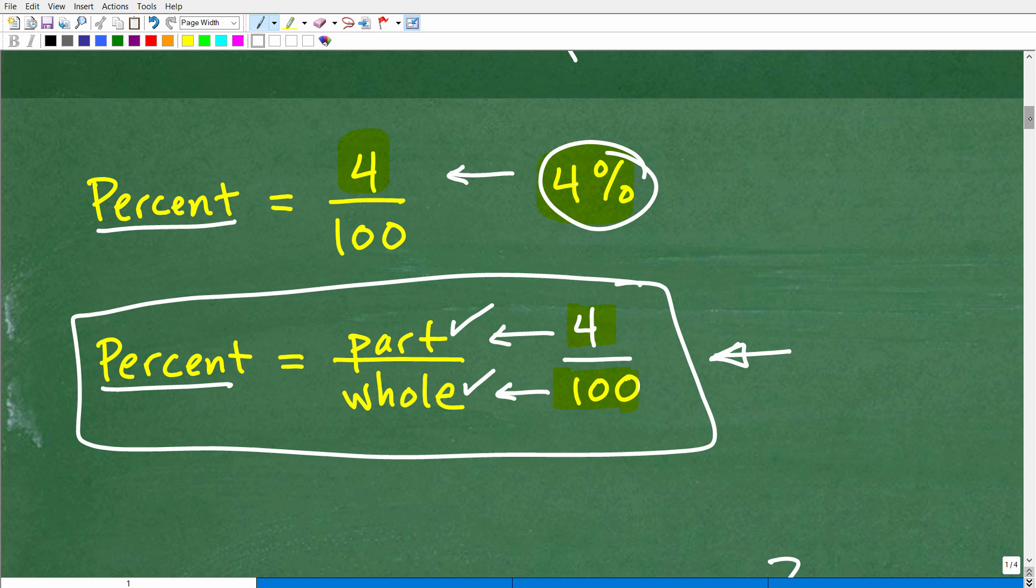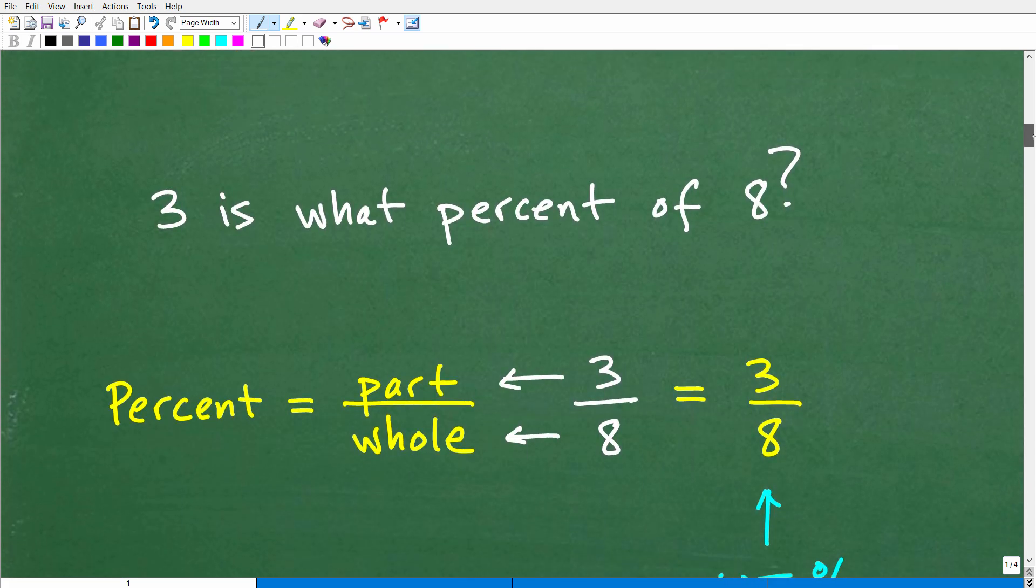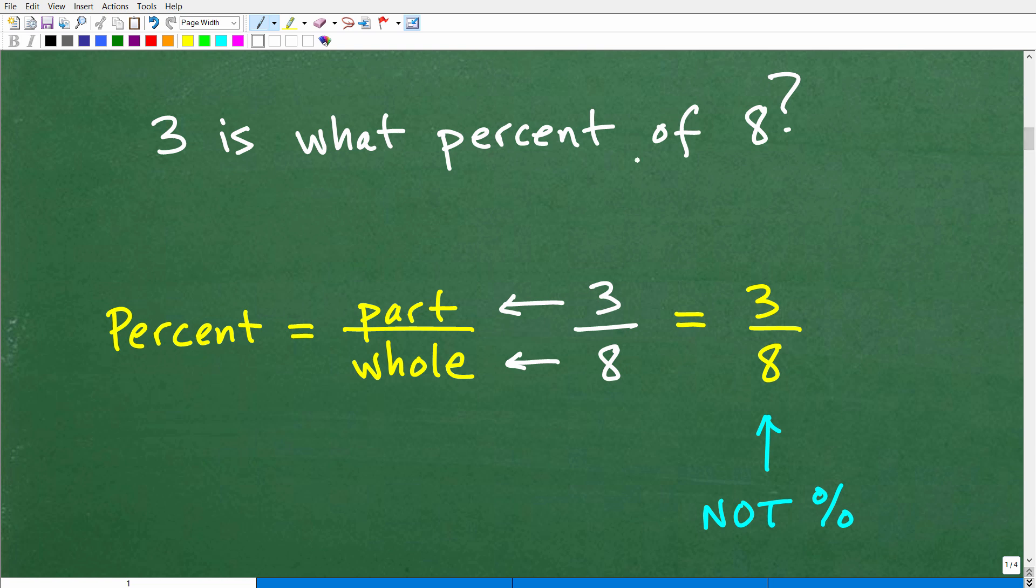Let's go ahead and apply this way of thinking about percent to this problem. 3 is what percent of 8? Let's think of this as a part out of a whole situation. What we're trying to figure out is: 3 is what, this is the part, out of how out of a greater whole? The part here is 3, the whole is 8. How much is 3 out of 8? That's how we're trying to express this, and we want to express this in terms of percent.